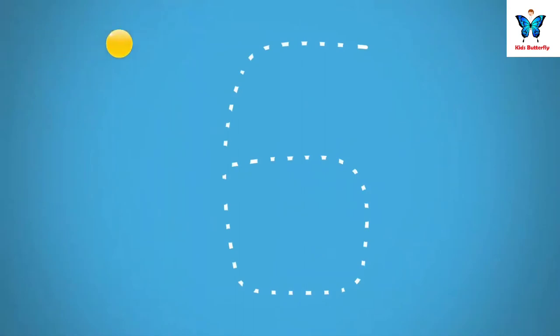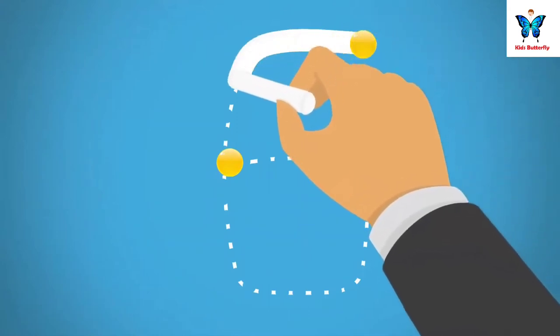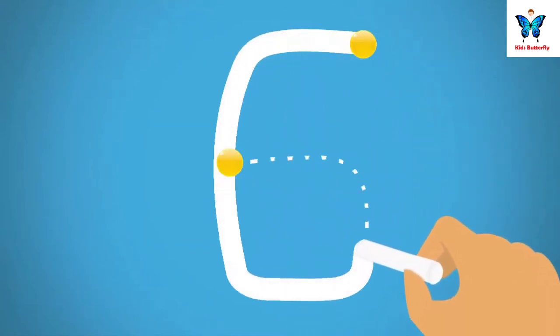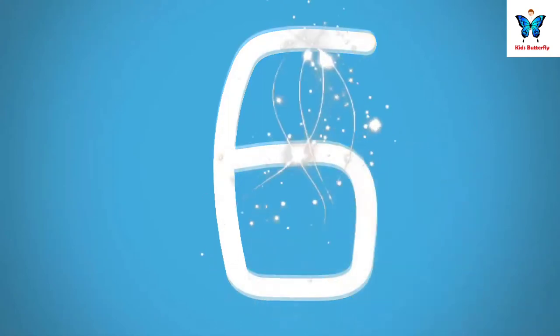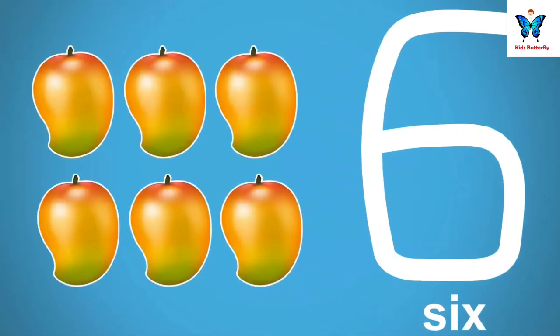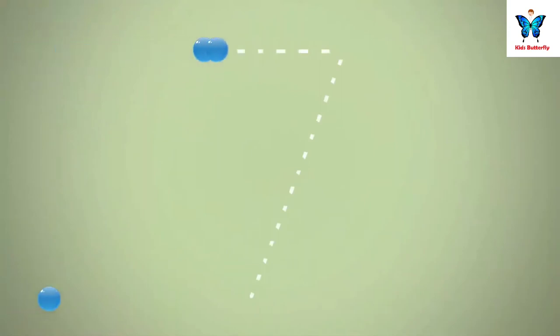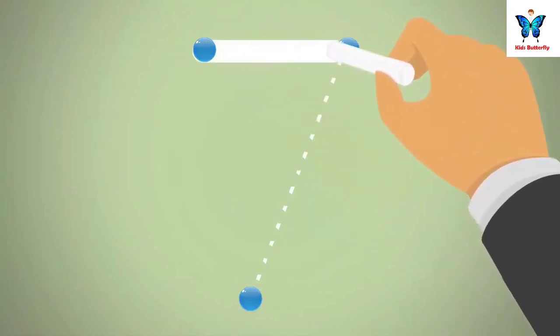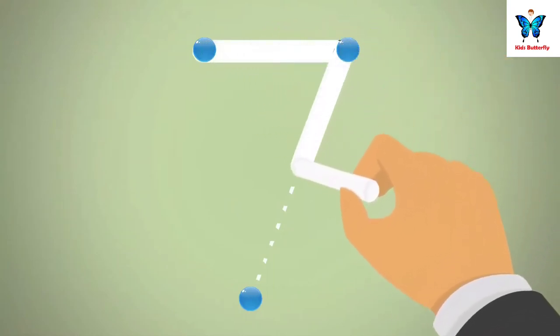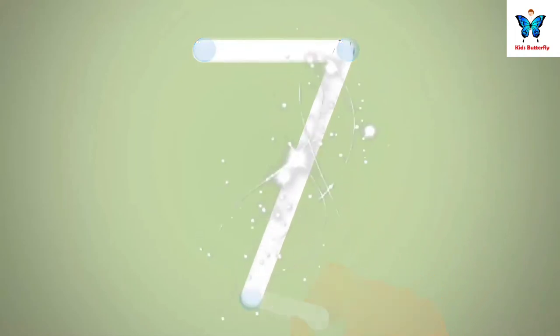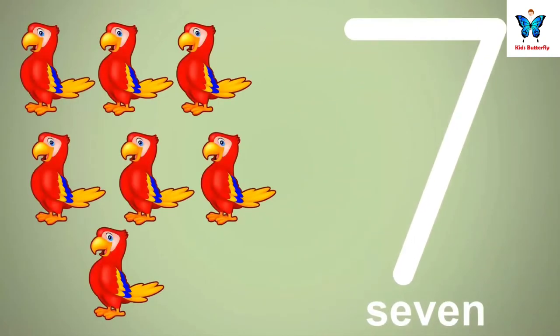6. Follow the dots to write the number. 6. 6 mangoes. 7. Follow the dots to write the number. 7. 7 parrots.